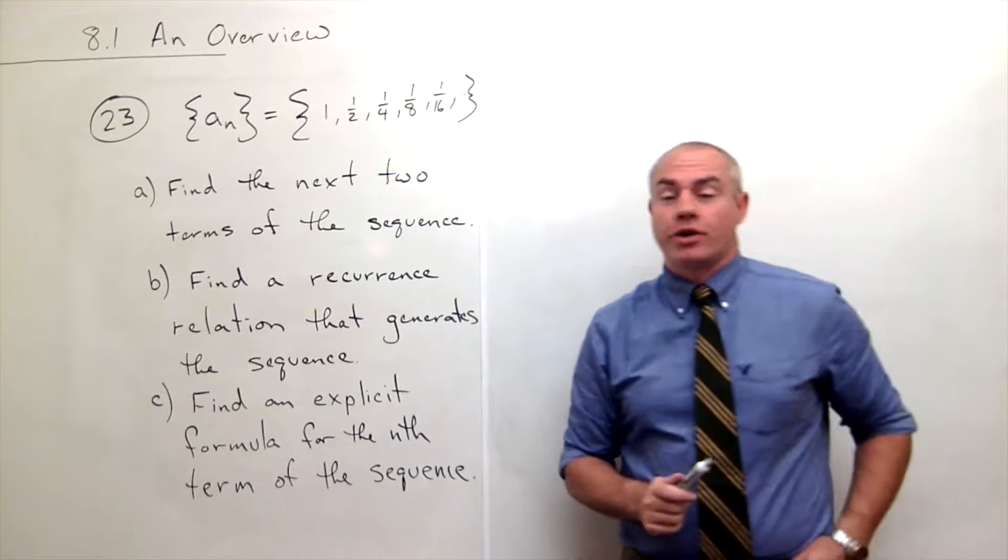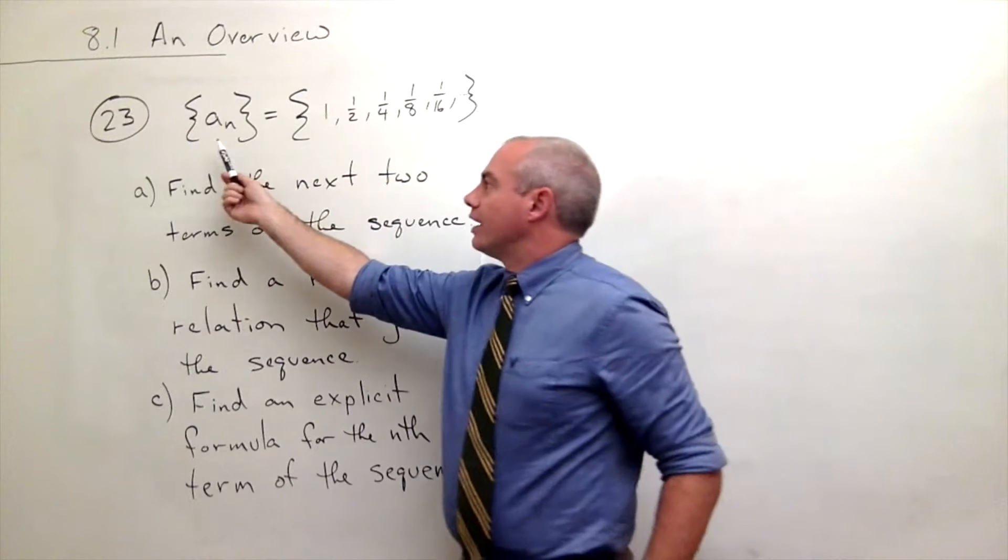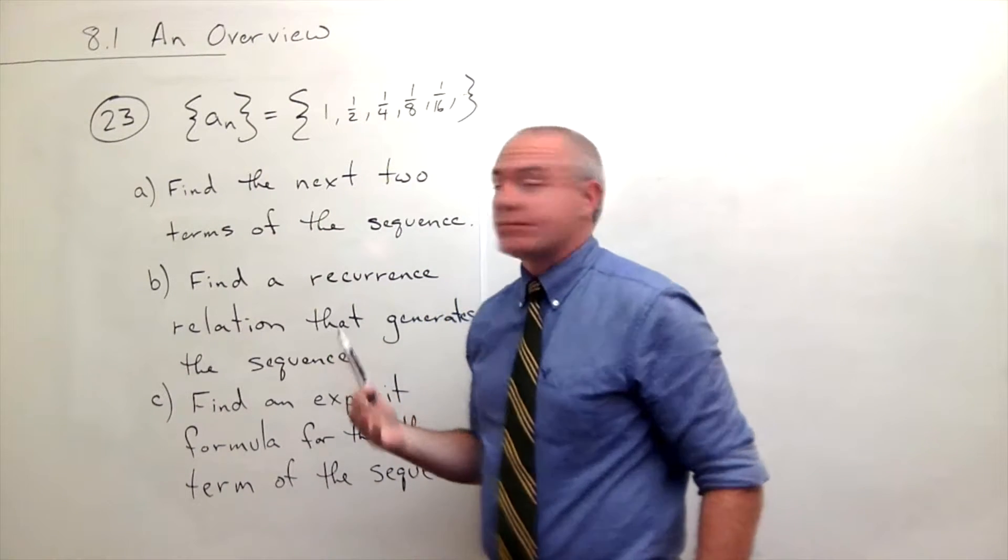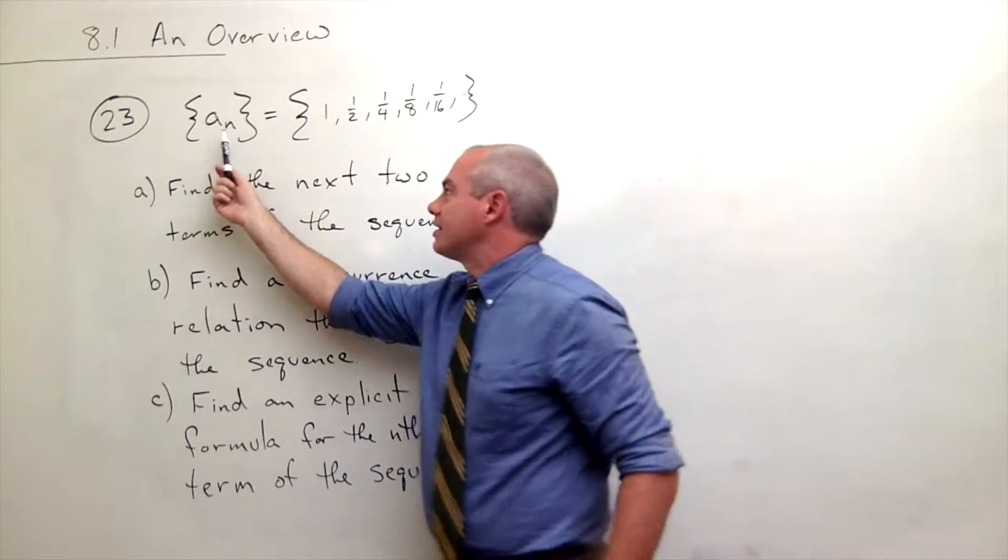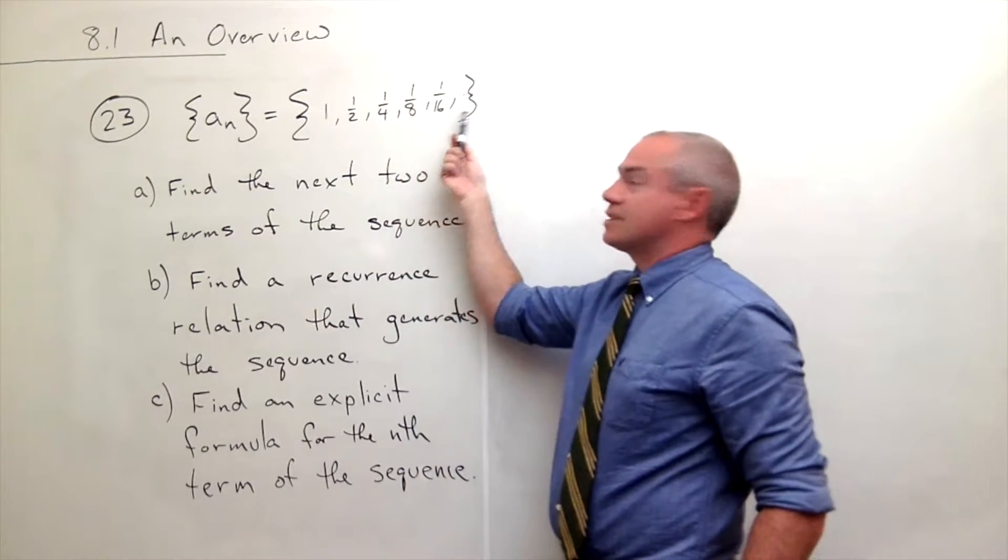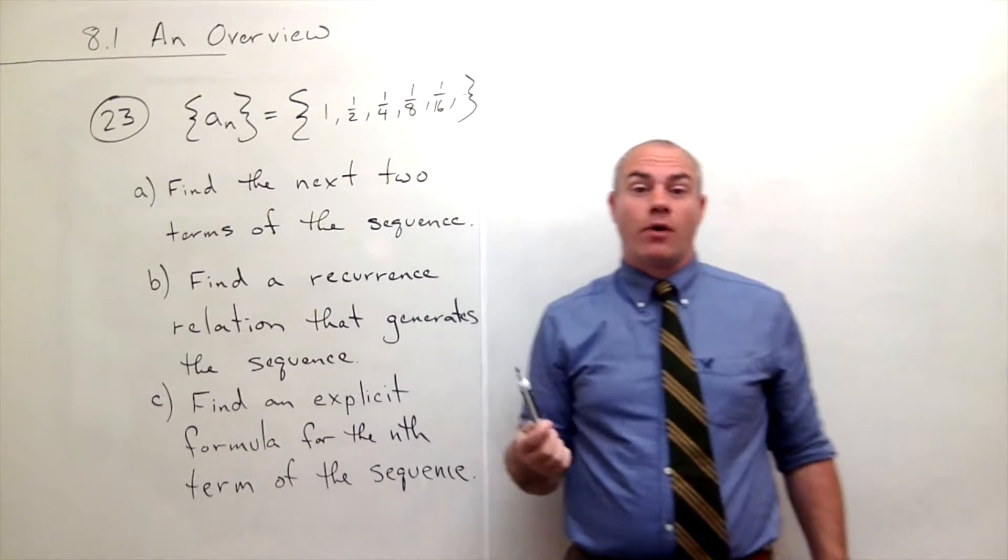In problem number 23, we start out with a sequence, and they give us some terms of the sequence. We have that the sequence is one, one-half, one-fourth, one-eighth, one-sixteenth, and so on.